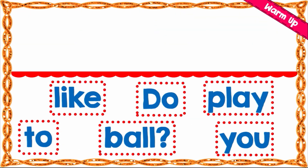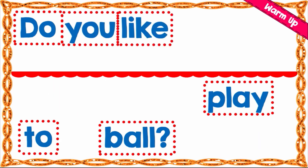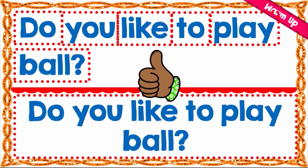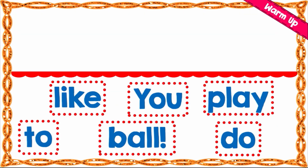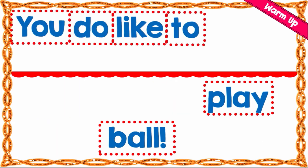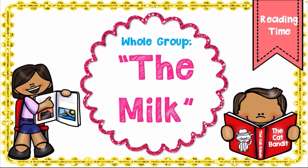Now let's unscramble this next set: 'do,' 'like,' 'to,' 'play,' 'ball,' question mark, 'you.' We have: 'Do you like to play ball?' — this is a question and it has been unscrambled. Now let's unscramble it again adding an exclamation mark: 'You do like to play ball!' It's an expression of excitement — you do like to play ball!